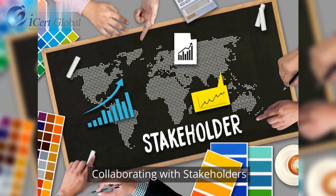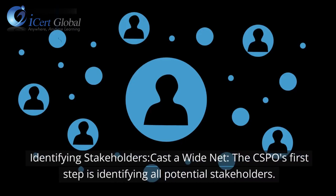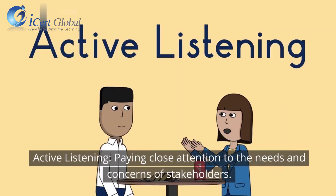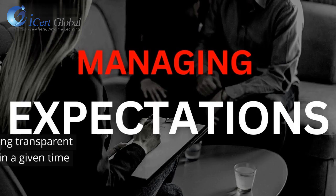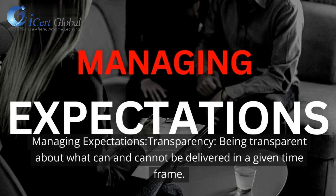Collaborating with Stakeholders: Identifying Stakeholders — Cast a wide net. The CSPO's first step is identifying all potential stakeholders. Active Listening — paying close attention to the needs and concerns of stakeholders. Managing Expectations — Transparency: being transparent about what can and cannot be delivered in a given time frame.